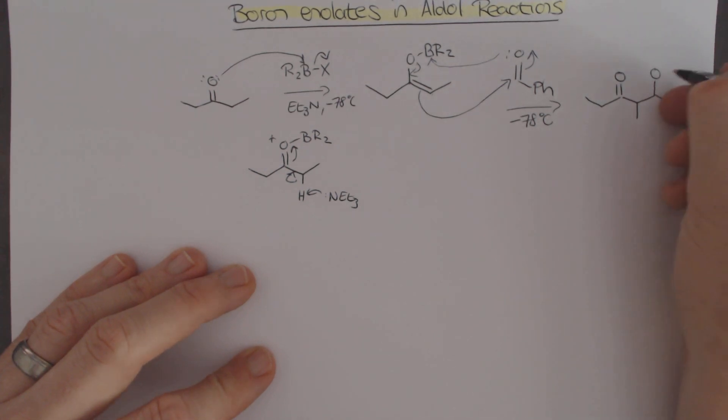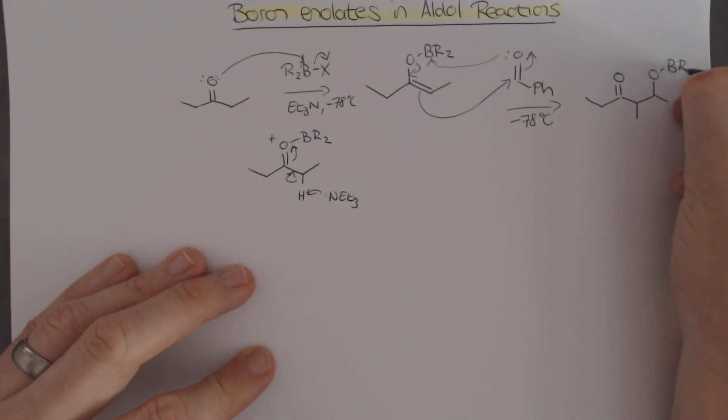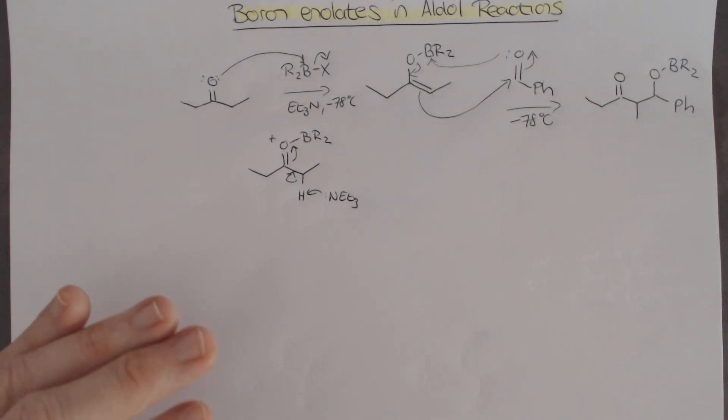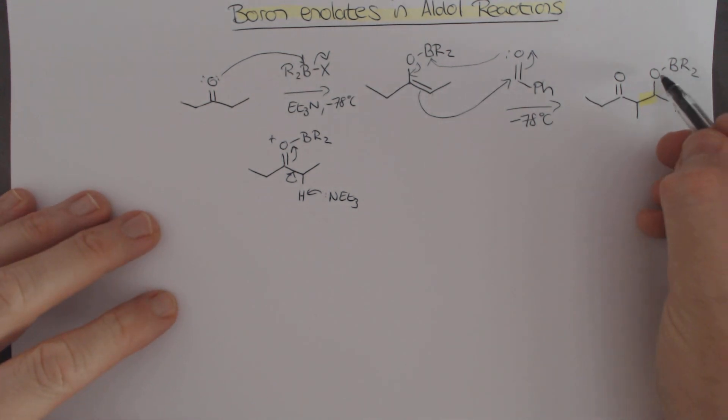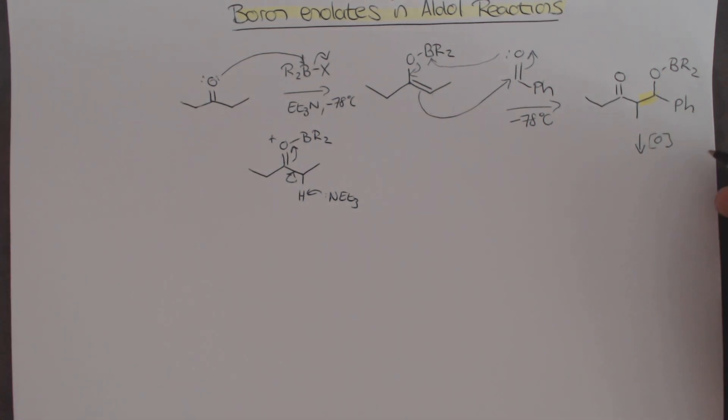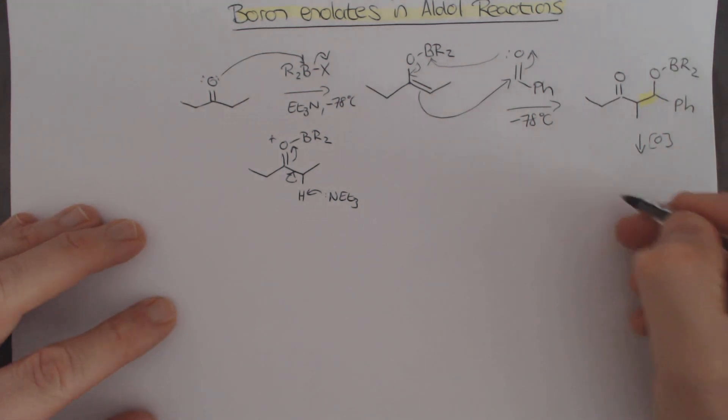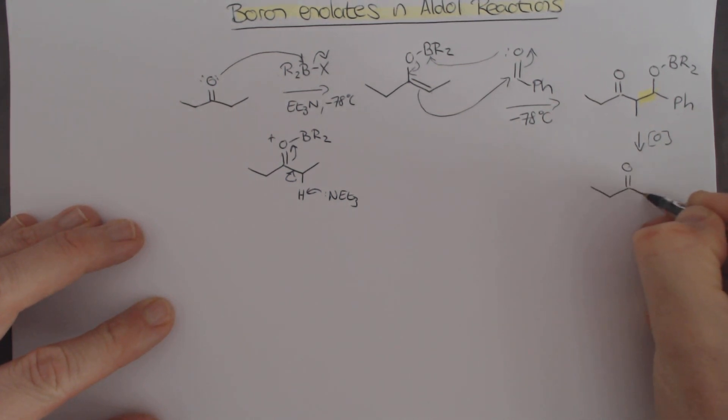Afterwards we end up with this. I'll just use benzaldehyde as a bit boring but anyway. We end up with this over there. We have formed a new carbon-carbon bond in a very typical aldol fashion. There's the new bond that's been formed over there. Of course the boron is now ended up on the oxygen over there. Typically we would do an oxidative workup which involves just adding some peroxide and base. This then forms the alcohol product like that over there.